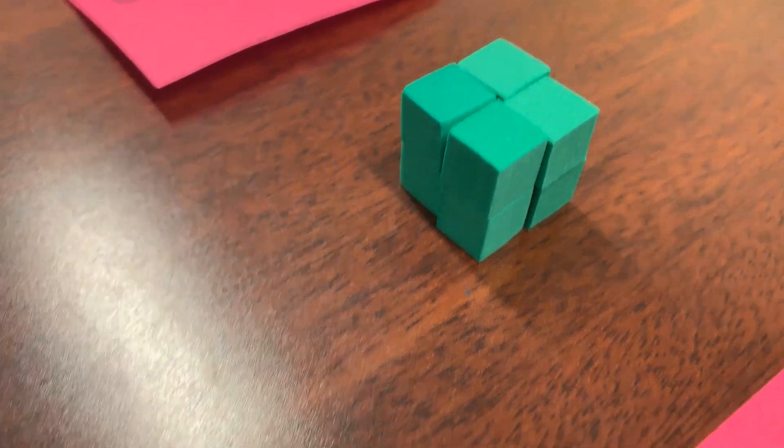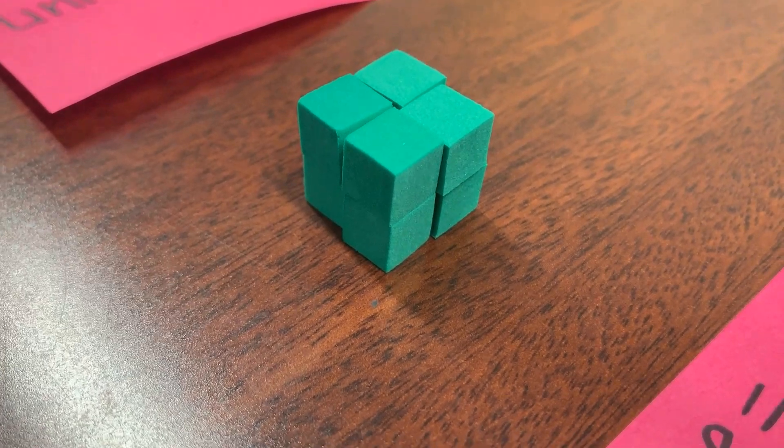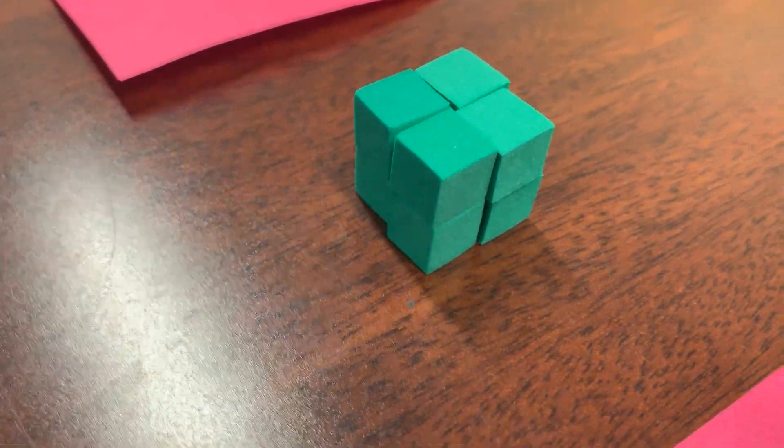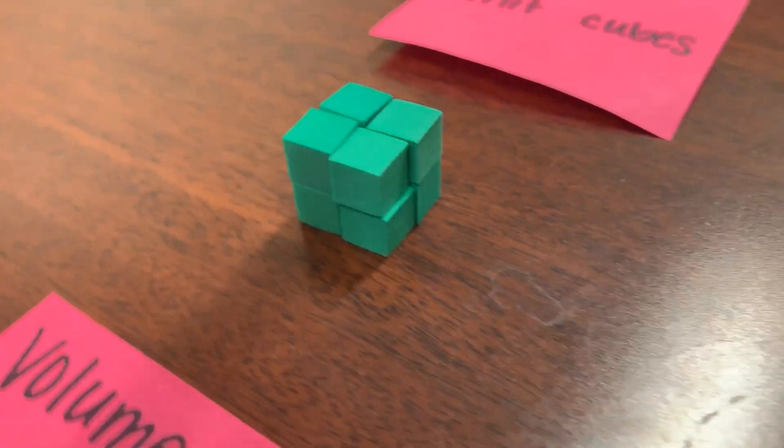Look at this shape, this rectangular prism. Can you look at that and determine what its base layer may be? Base means bottom, the bottom layer of the shape. How many unit cubes are on the bottom layer?